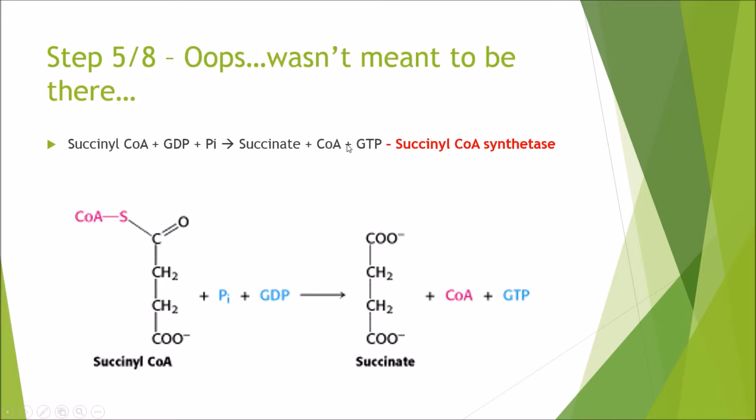Step 5 — the succinyl CoA combines with GDP and inorganic phosphate, which allows us to cleave off that CoA. In the process we synthesise GTP and end up with succinate, and that is catalyzed by succinyl CoA synthetase.